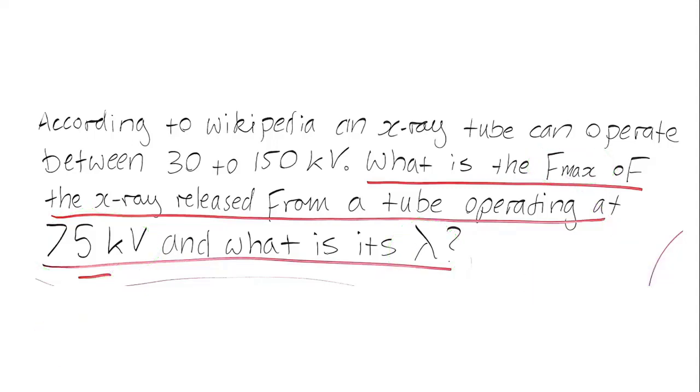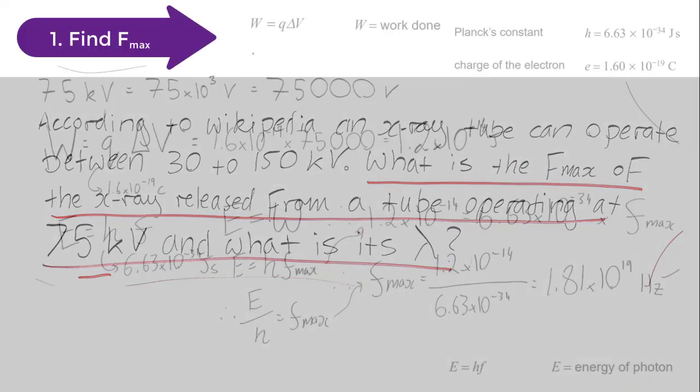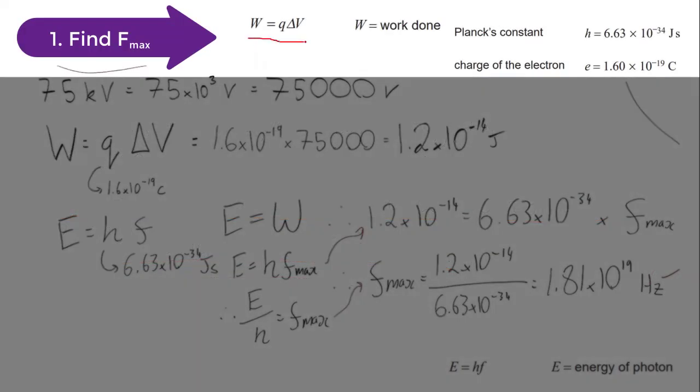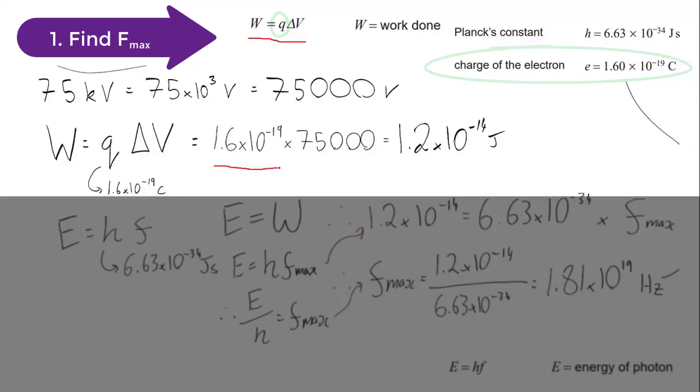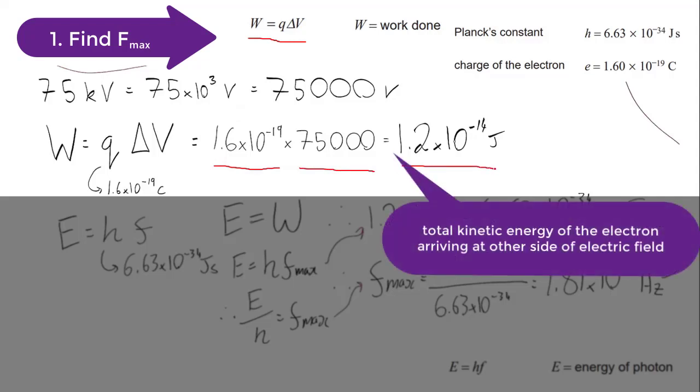The first thing you have to do is to start using the relevant formulas. And this is W = qΔV, W being energy, and that's the work done by the electric field to accelerate the electrons across. So you get the charge on an electron, which is 1.6 by 10 to the negative 19 coulombs, and times it by the voltage that it's going to be accelerated across. In this case we've got the charge on the electron here that's q, we've got the voltage here, giving you the total kinetic energy of the electron arriving at the other side of the electric field being 1.2 by 10 to the negative 14 joules.